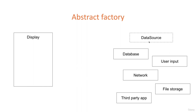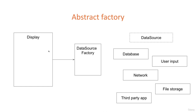Let's imagine we have a data source type — an interface — and then we have database, user input, network, and whatever other data sources we might want. All of these have certain subtypes underneath them. For example, the database might have SQL database, MySQL database, or whatever type. You can think of this as a factory for databases, a factory for user inputs, and so on. The display doesn't care where it gets the data as long as data is retrieved the way it wants. So we can have a data source factory — a higher-level abstraction — which gives us the data source, whatever that data source may be.